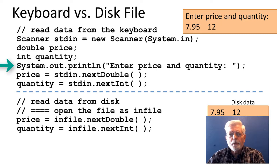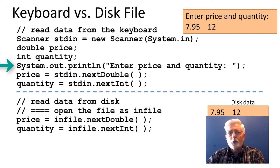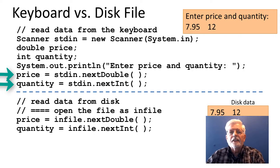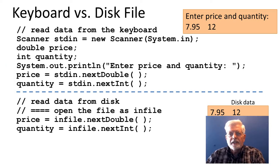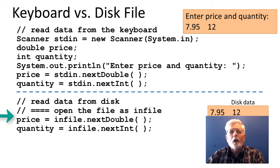When reading from the keyboard, a prompt message is needed. System.out.println is used to display the prompt message 'Enter price and quantity' to let the user know to type something. stdin.nextDouble() and stdin.nextInt() are used to read floating point data and an integer into the price and quantity variables. When reading from disk, a prompt message is not used since the data is already on the disk and we don't need to ask that it be entered at the keyboard.